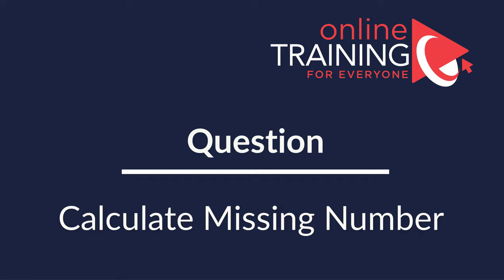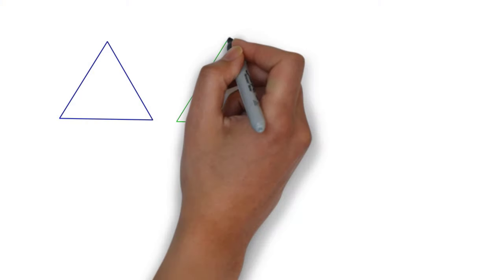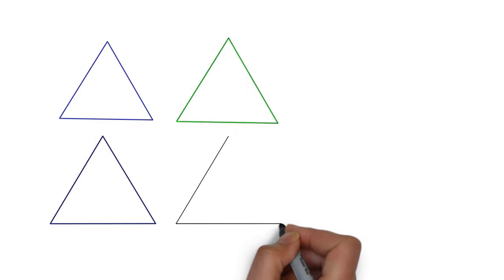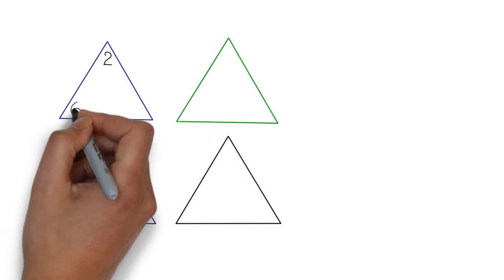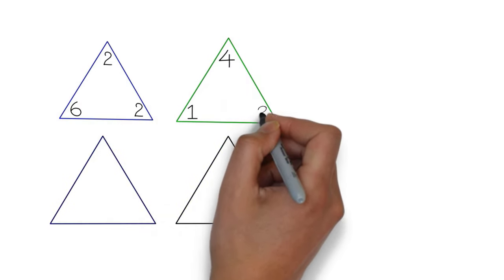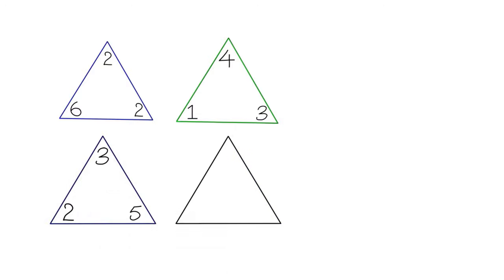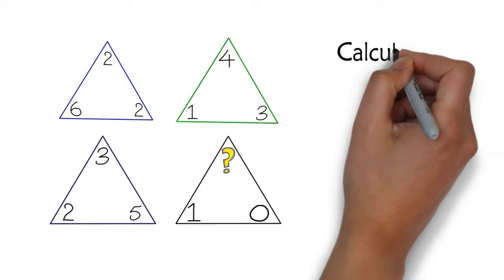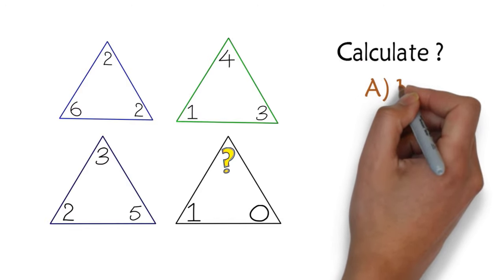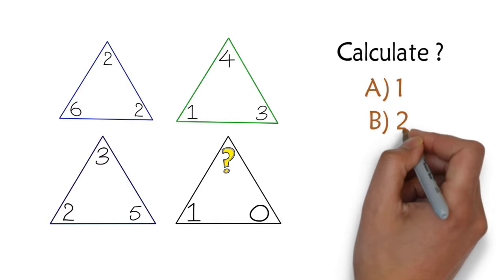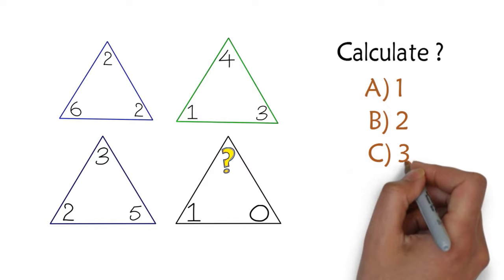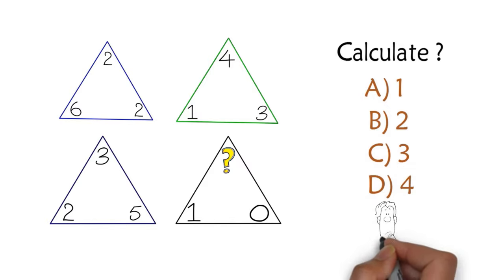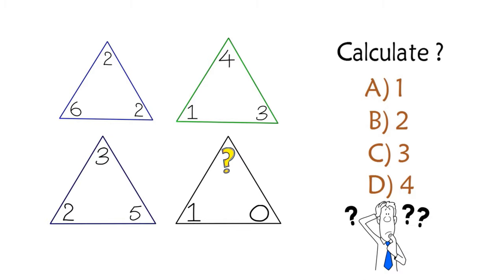Here is another puzzling question you might find difficult to solve. You are presented with four triangles; each triangle has a number in the corner and you need to calculate one of the missing numbers in the upper corner of the black triangle. You have four different choices: choice A is 1, choice B is 2, choice C is 3, and choice D is 4. Can you determine the answer?